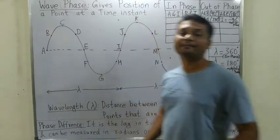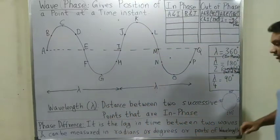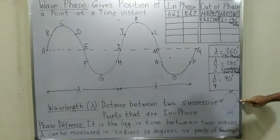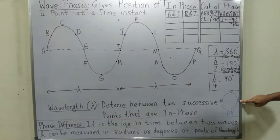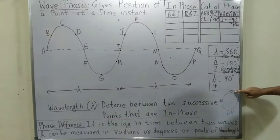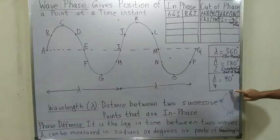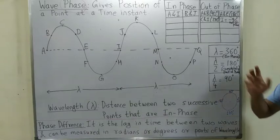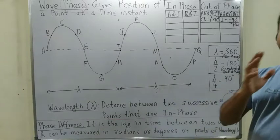What was the meaning of phase constant? Phase constant zero means the particle is going from mean position towards positive extreme. Phase constant 90 means the particle is going from positive extreme to mean position.